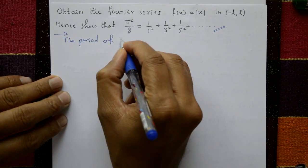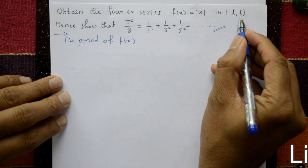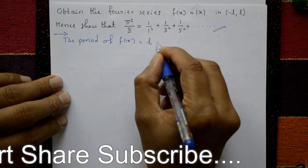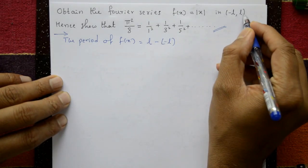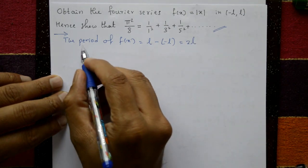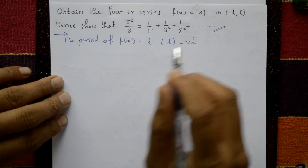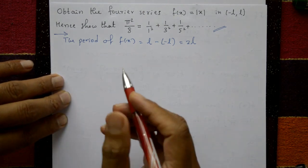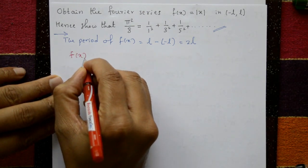First, find the period. The period of f(x): a and b means b minus a, which is l minus (minus l). This b minus a equals 2l. So the Fourier series period is 2l. The given f(x) is equal to: